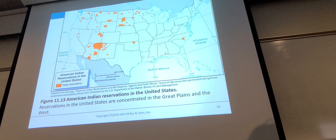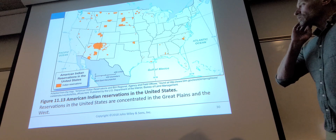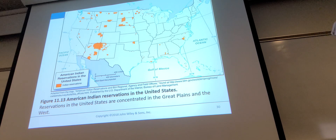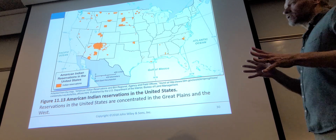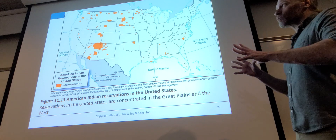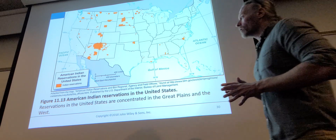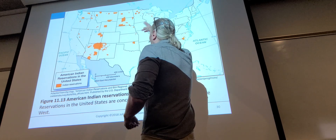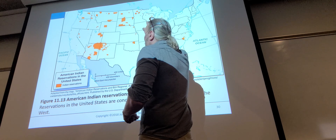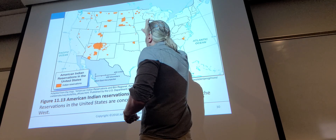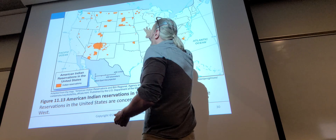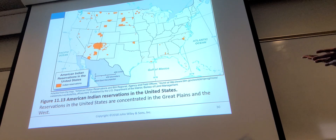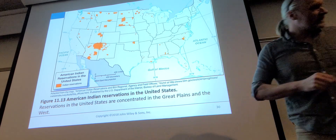This map shows American Indian reservations in the United States. Sometimes these give the false impression that this is where most Native Americans were at earlier times, but these are just areas people were forced to go. A great deal of Minnesota's Native Americans live today up in Canada because they were forced to march out, especially those who lived in the southern part of the state.